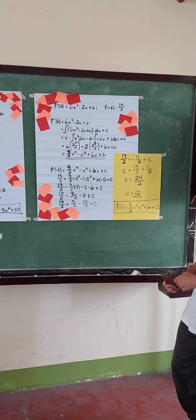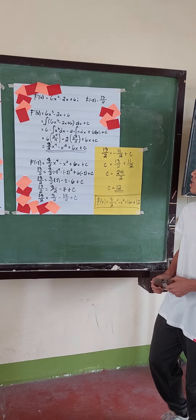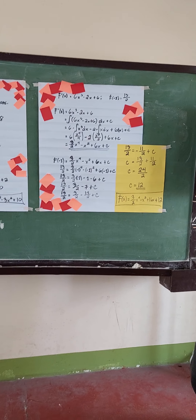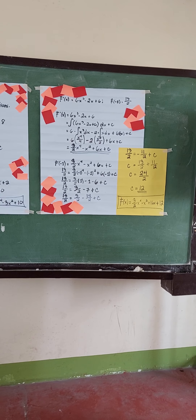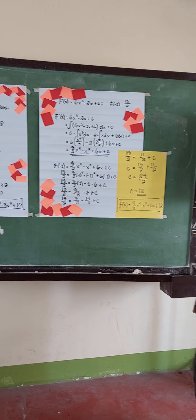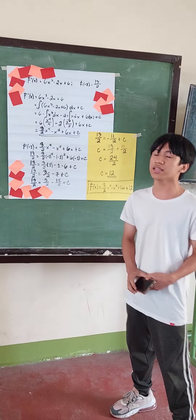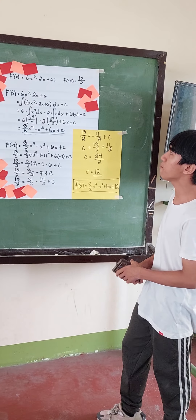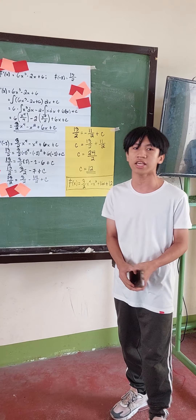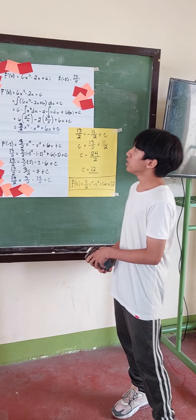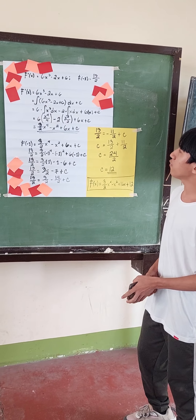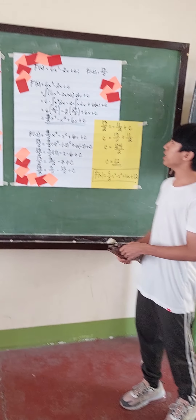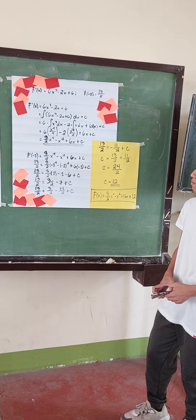For the next problem, f prime of x is equal to 6x cubed minus 2x plus c, and f of negative 1 is equal to 13 over 2. Now let's simplify: the integral of 6x cubed minus 2x plus c dx plus c.